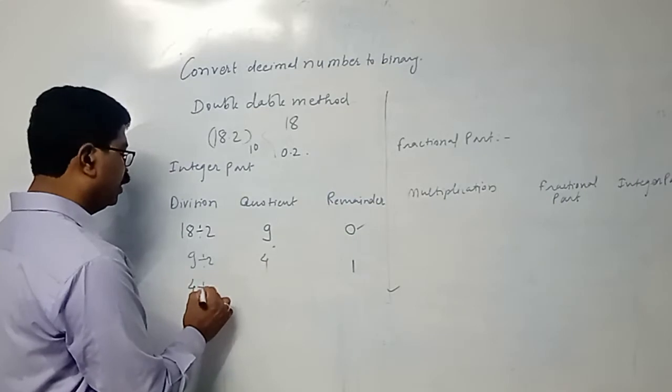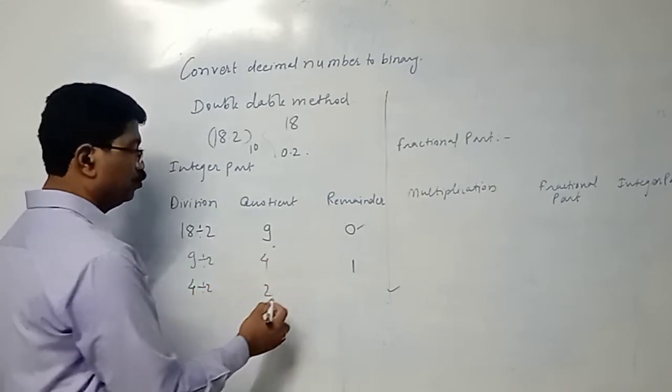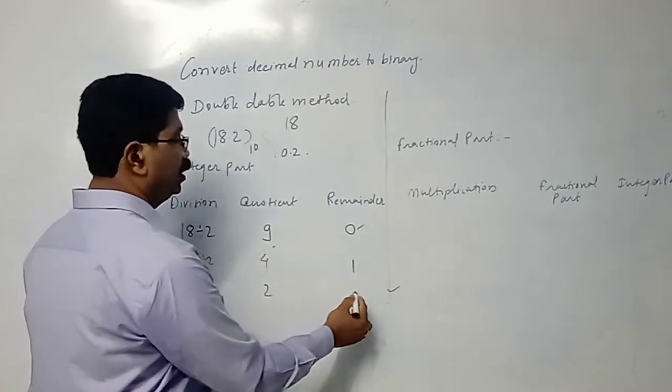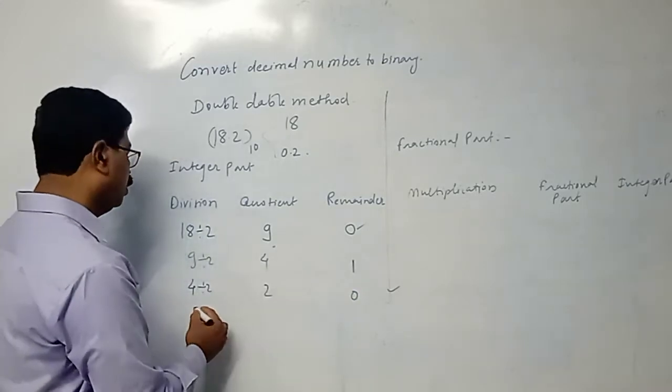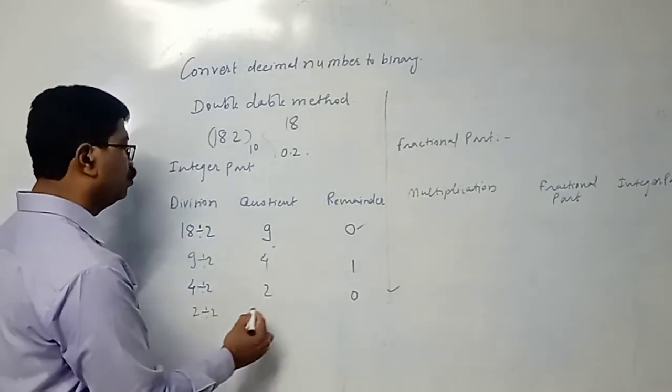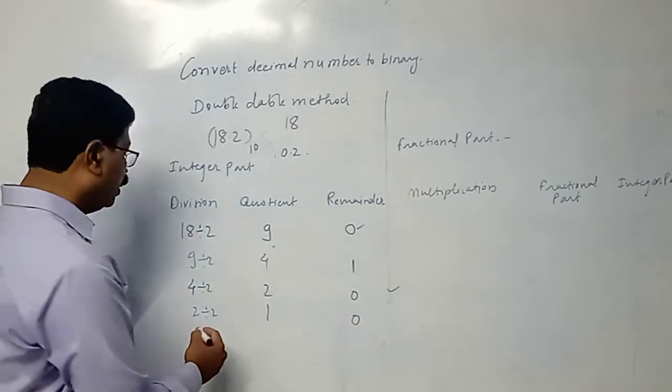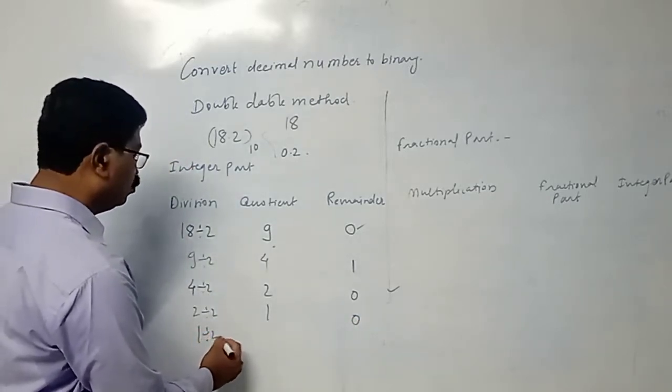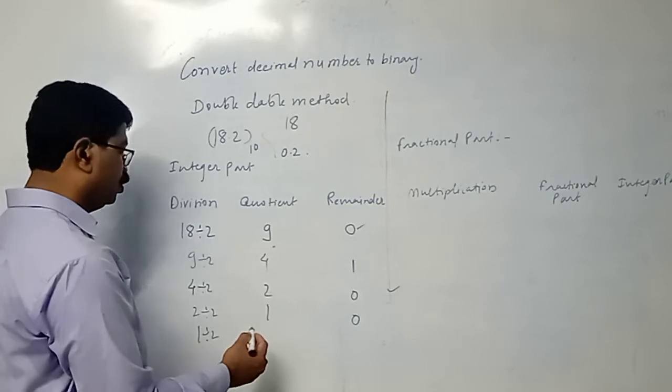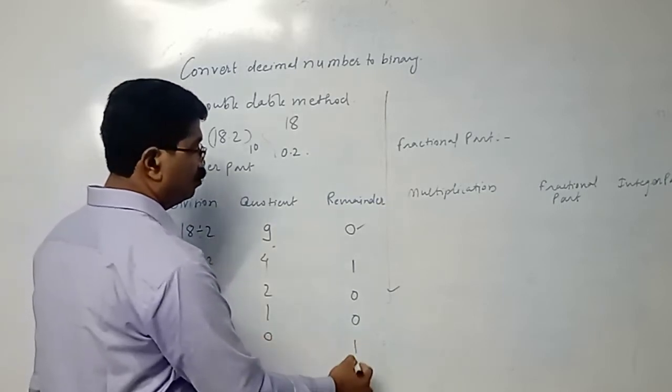Then 4 divided by 2, quotient is 2, remainder is 0. Then 2 divided by 2, quotient is 1, remainder is 0. Then 1 divided by 2, division is not possible, so quotient is 0 and remainder is 1.